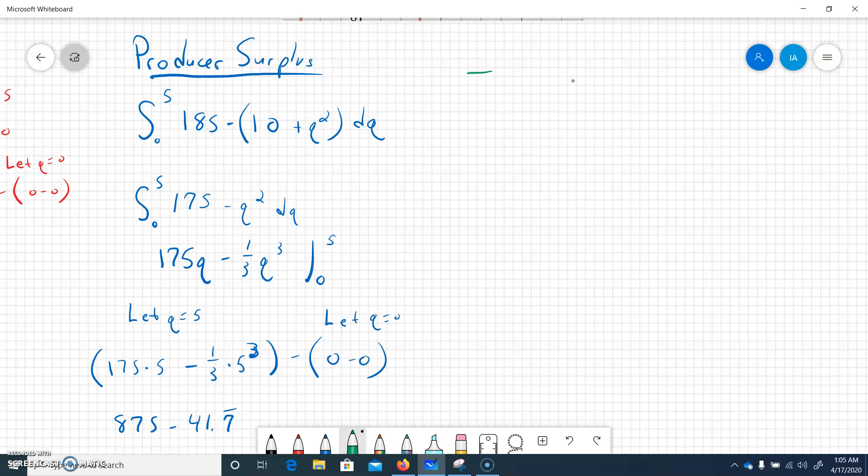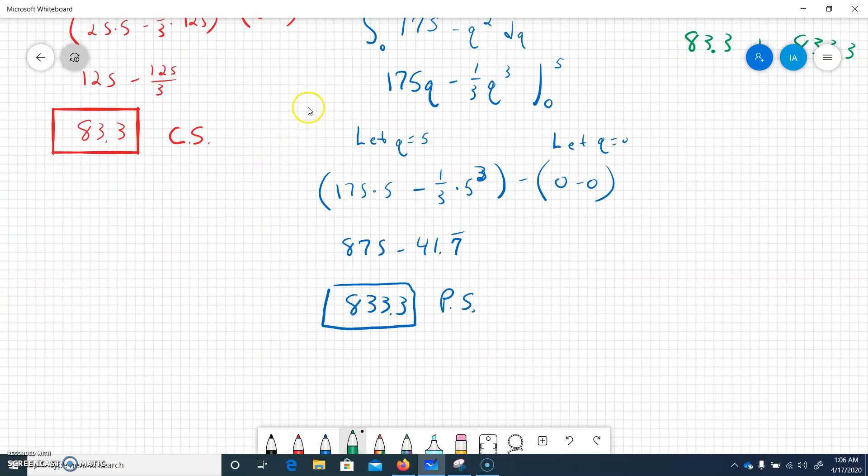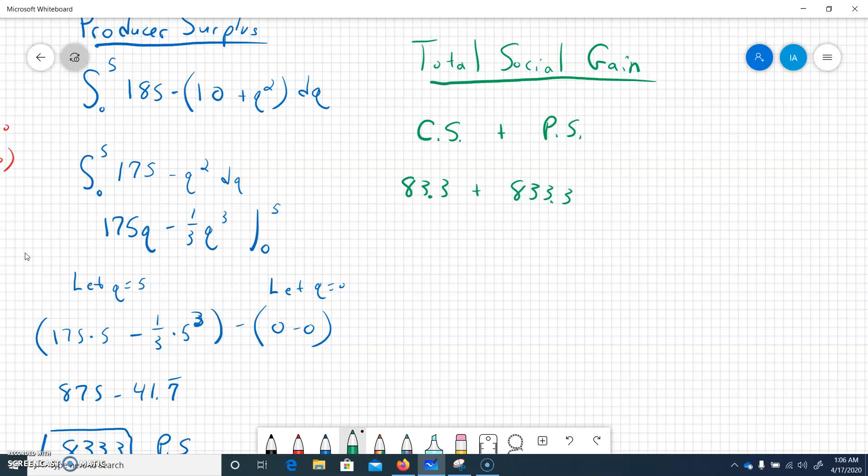That should be those two pieces of the curve added together. Total social gain. So we could write out the formula for this, but we know that we have found the consumer surplus and we'll add it to the producer surplus. And this was 83.3, this was 833.3. Let's make sure both of those are right from memory. Yes. So I'm going to go to the calculator and I get 916.6.